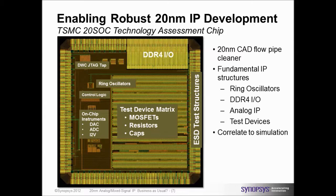The main goals were: number one, a CAD flow pipe cleaner - if you don't have a CAD flow, forget about doing design. Then we put a couple of fundamental structures on it: ring oscillators, analog IP, a lot of devices we wanted to test, as well as DDR4 IOs, which we thought would be very interesting to analyze. The main objective was to figure out what are the effects of these things on analog design - which analog design techniques work and which don't - and also to ensure at some point we have very good correlation between our simulation environments and actual silicon.